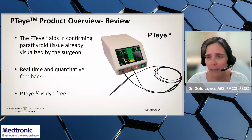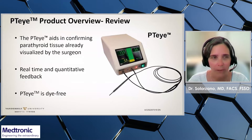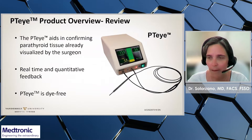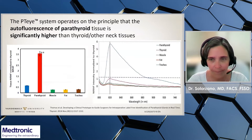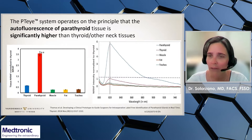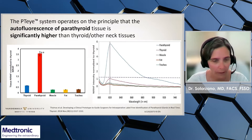The PTI system aids in the identification of parathyroid tissue by confirming parathyroid tissue already visually localized by the surgeon. The PTI gives real-time quantitative information and is dye-free. The PTI system operates on the principle that the autofluorescence of parathyroid tissue is significantly higher than thyroid and other neck tissues.